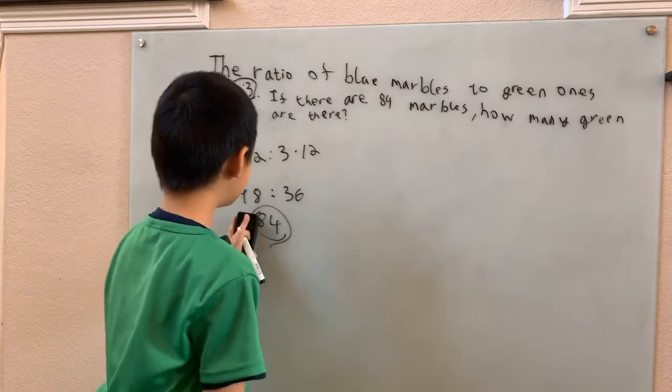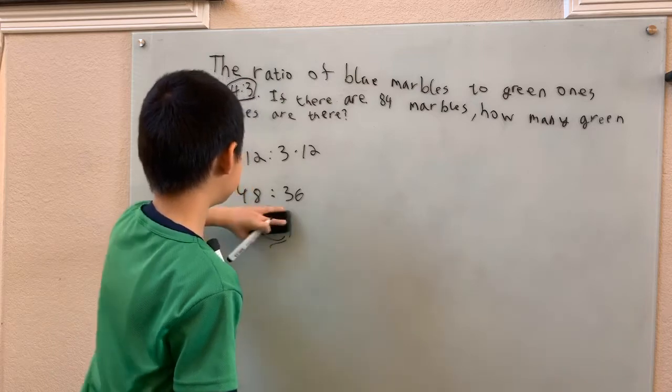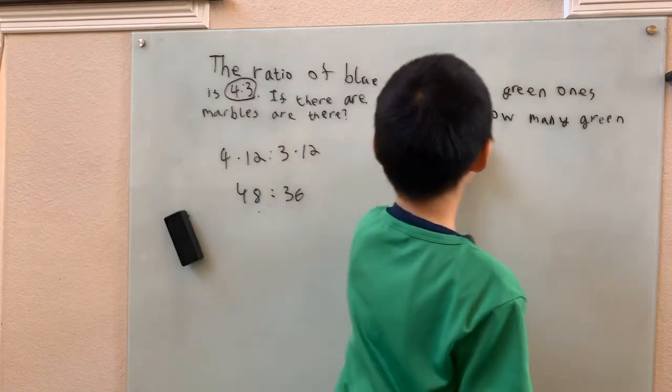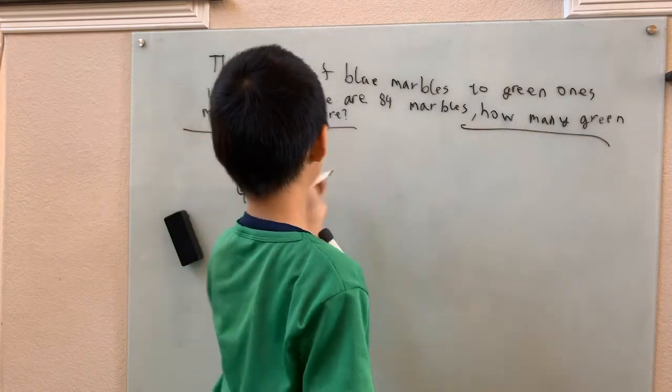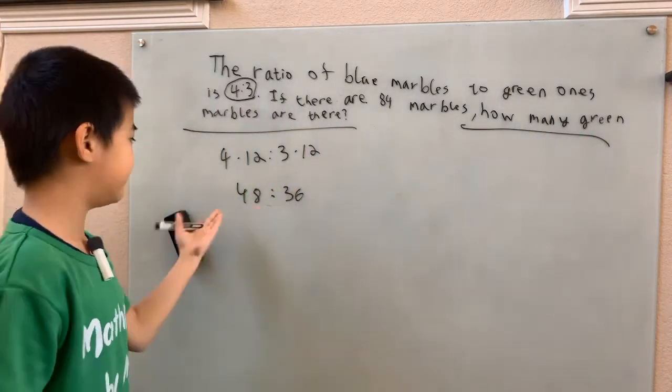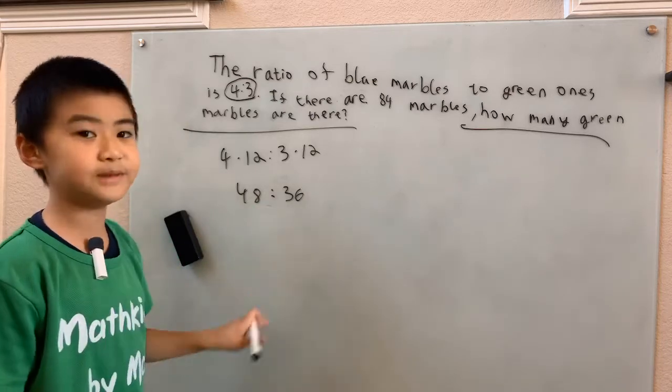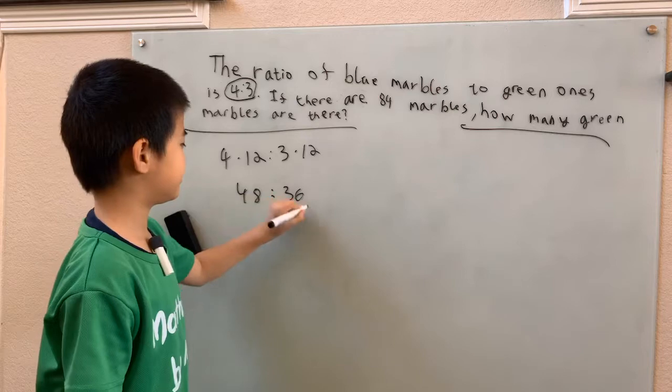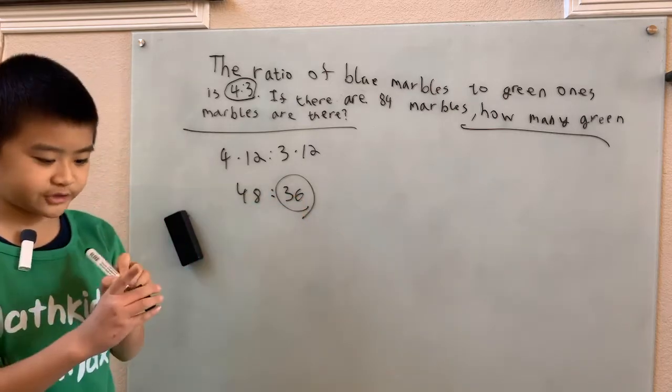Got that? So last step of the problem is to read the question. They want how many green marbles are there, not the ratio. If we write down 48 to 36, we'd be wrong. They want a whole number. This is green. 36 is our answer.